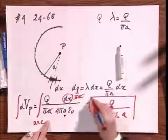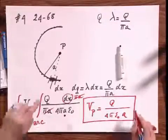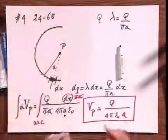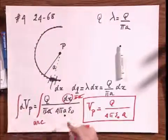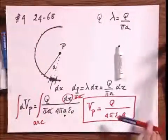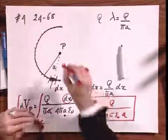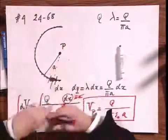That would be the potential at this point P, due to this half arc. Now you're being asked, what is the electric field at point P?